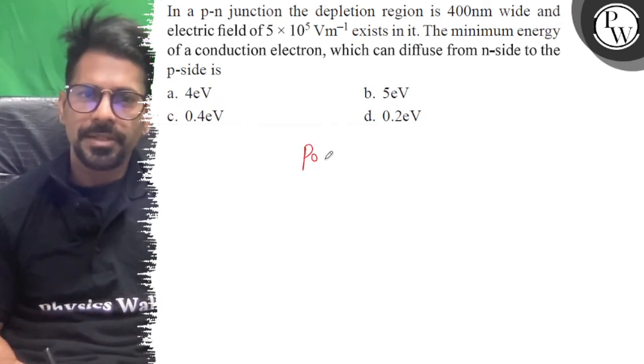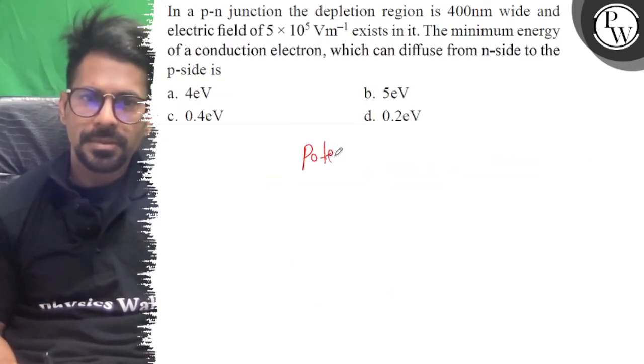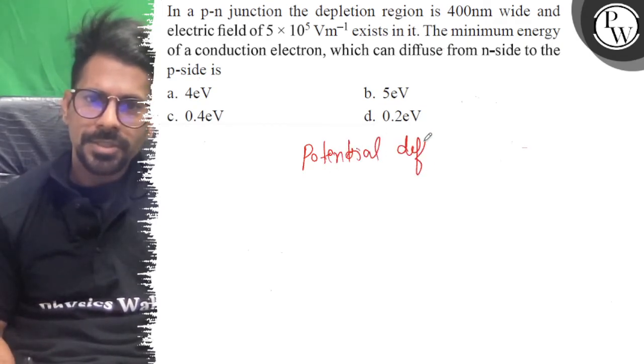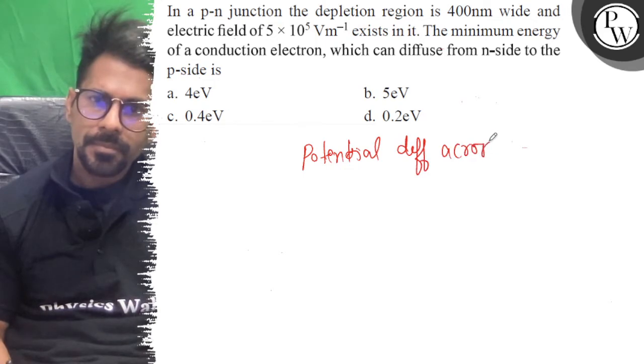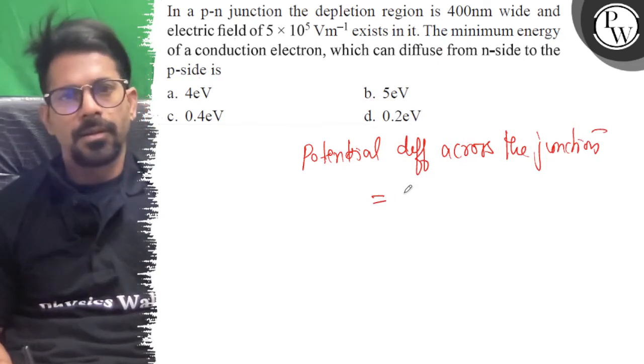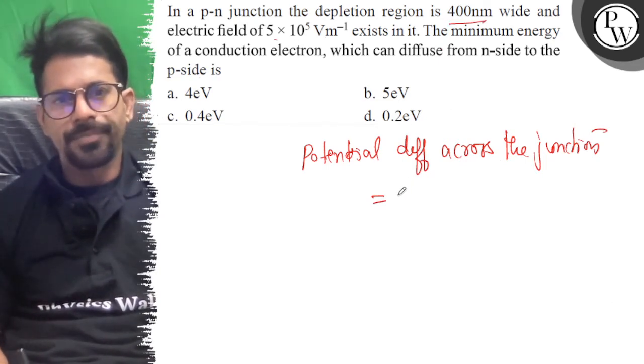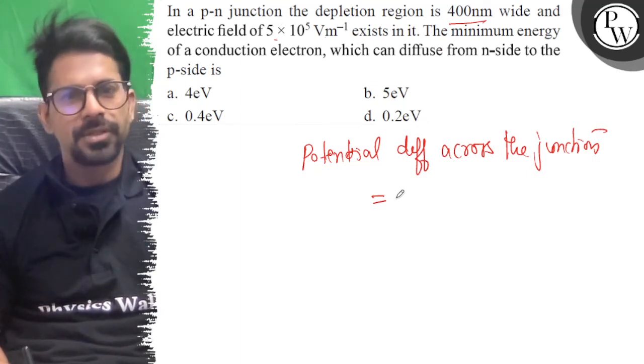So potential difference across the junction, that would be 5×10^5×400. E is equal to V by D, so V is equal to E into D.